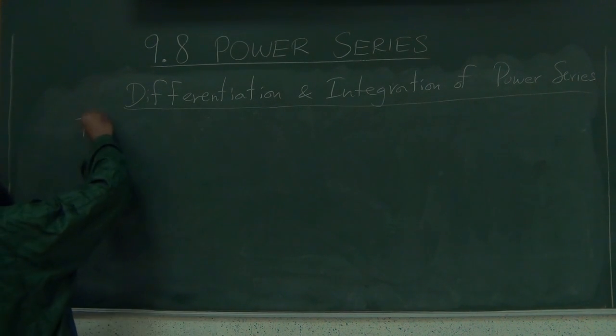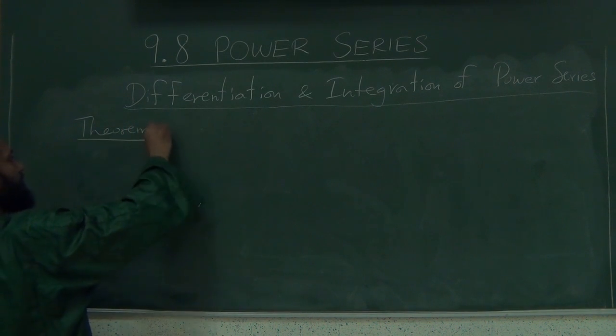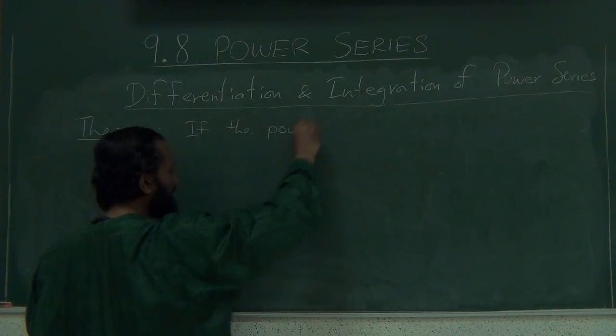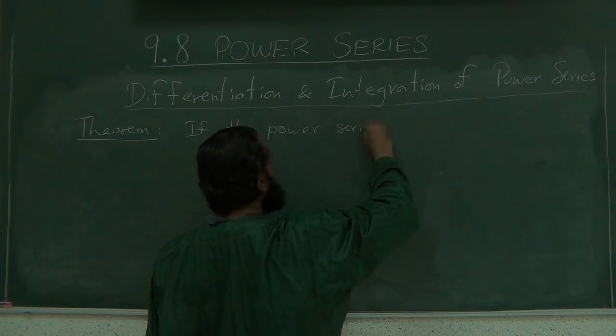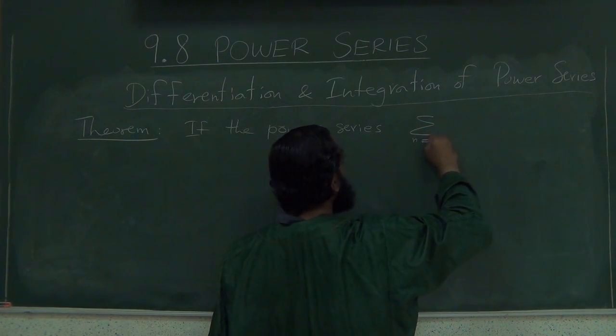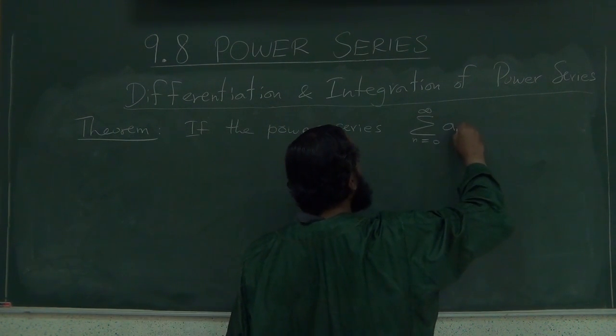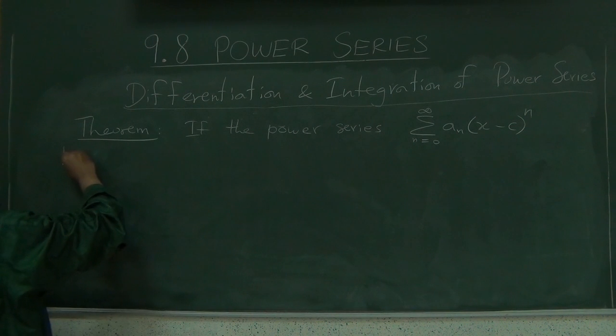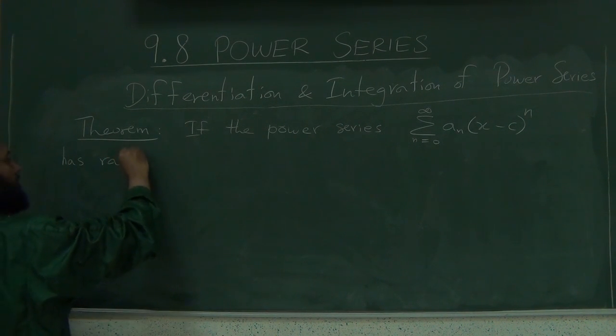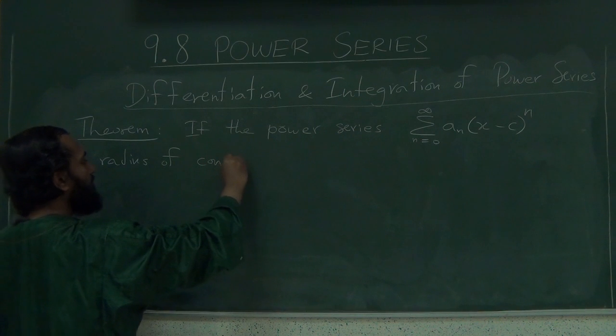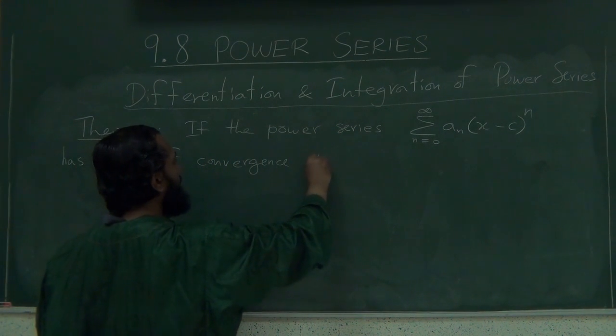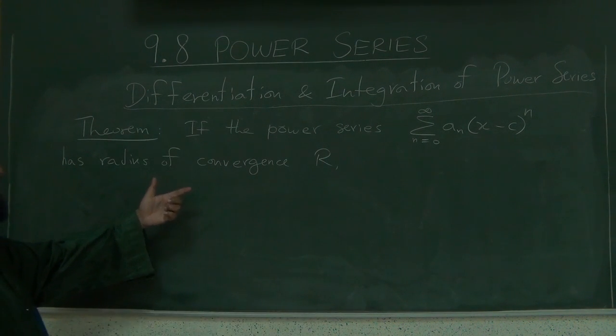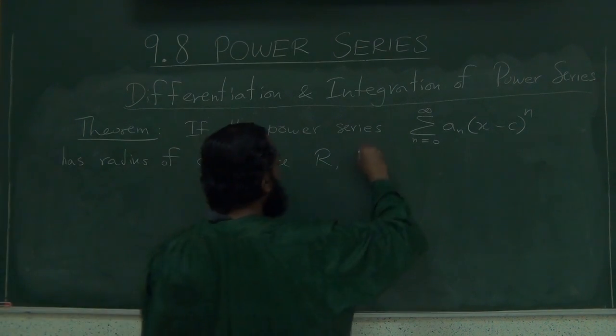So there is a theorem which says that if the power series, we will take the general power series with center at c, so n equals 0 to infinity, a_n (x minus c) to the power n, has radius of convergence r, then, okay, so this is the hypothesis. If the power series converges in a certain radius, certain domain, then,